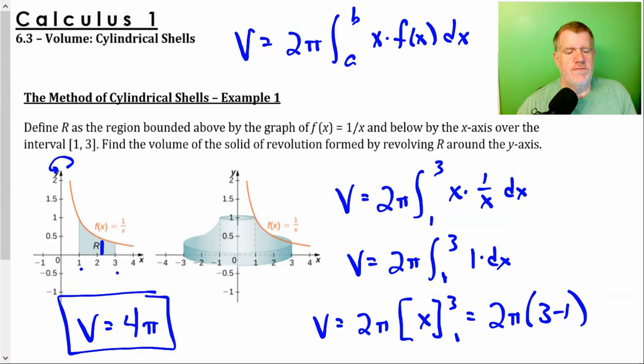So the volume of that shape is 4π. Notice with cylindrical shells, it doesn't matter if we have a gap in it or not. It doesn't make a difference, because we're only talking about the cylinders. The cylinders are going from 1 to 3. So I don't care about this gap. There's no subtraction to do. That's why sometimes it's a little bit easier than using a washer method.